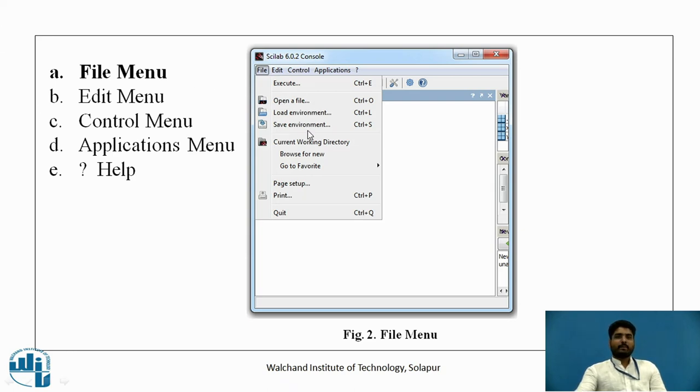Whatever we work on Scilab, we can store it or we can save it and we can open a new file from here. Then, current working directory, we can print it, we can set up the page and lastly we can quit from the file menu or there is a shortcut also, we can press control Q for quitting the Scilab.